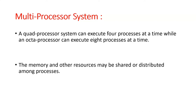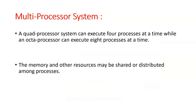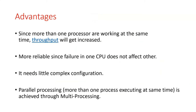Memory and other resources may be shared and distributed among processors. In this configuration, the memory and I/O devices are connected and can be shared by different processors. Since more than one processor is working at the same time, the throughput will increase.